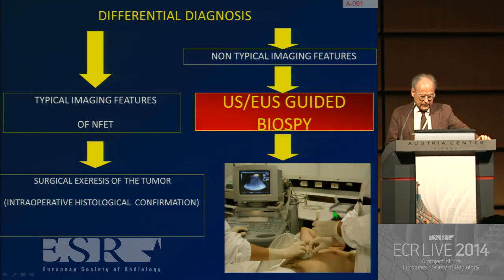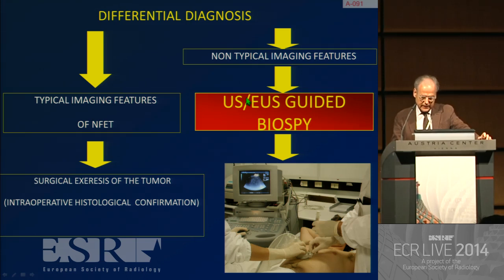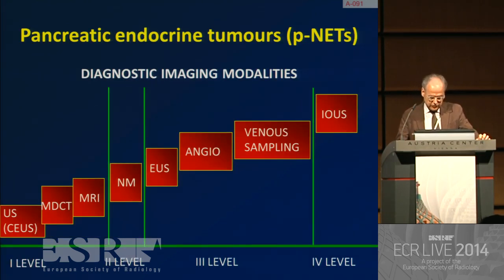In general, we can predict the diagnosis. When we have typical imaging features of this type of tumor, we proceed with surgical resection and intraoperative histological confirmation. But in non-typical cases — about 30% of our cases — other imaging is required, and ultrasonography or endoscopic ultrasound-guided biopsy has to be performed for making a final characterization of the lesion.